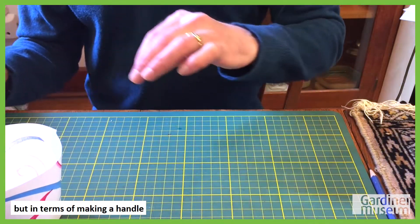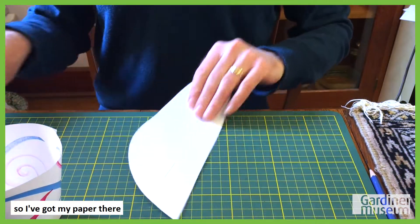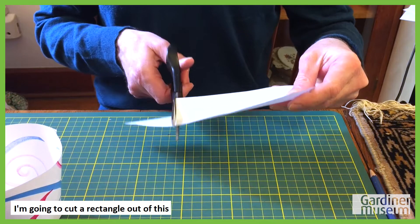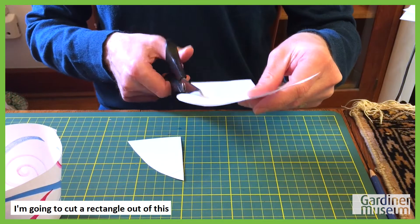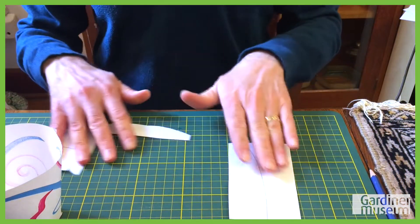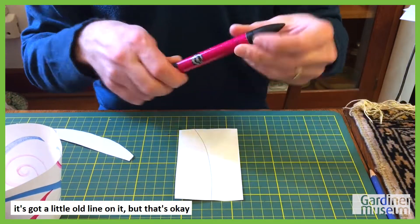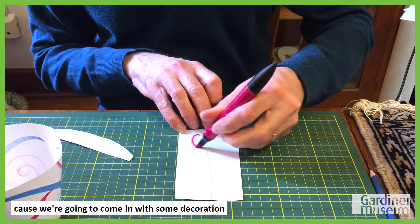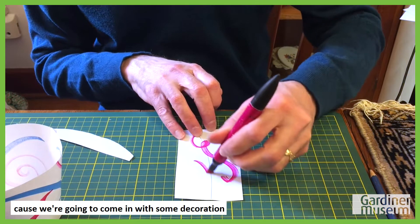But in terms of making a handle, so I've got my paper there. I'm going to cut a rectangle out of this. It's got a little old line on it, but that's okay, because we're going to come in with some decoration, lots of color here. Bring in the two colors I used on the cup.